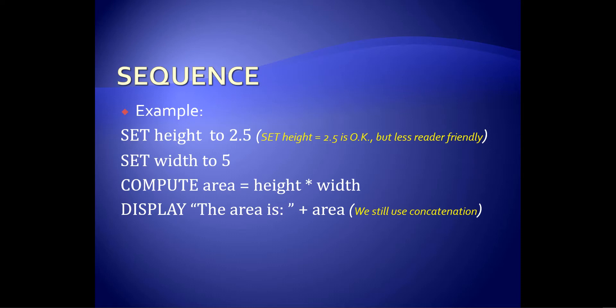Here's a simple example. Set height to 2.5. Set width to 5. Compute area equals height times width. Display, the area is plus area. Now, a couple of things. I highlighted them here. You'll notice that where I have set height to 2.5, I could have just as easily written set height equal 2.5. It's perfectly fine. I would accept. I wouldn't take marks off. But it is a little less reader friendly. So it's up to you how you want to do that and what you're more comfortable with. But again, I wouldn't take off any marks for that. Similarly speaking for the set width to 5, you could do the exact same thing.